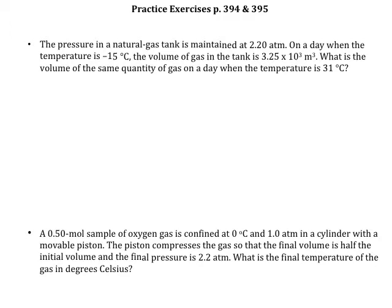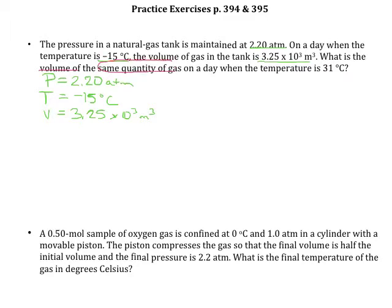Let's look at the first problem. The first thing they tell us is a pressure of 2.20 atmospheres. Then they tell us we've got a temperature of negative 15 degrees C, and when it is that temperature and pressure, the volume is 3.25 times 10 to the third cubic meters. They're asking what is the volume — that's what we're going to be solving for.